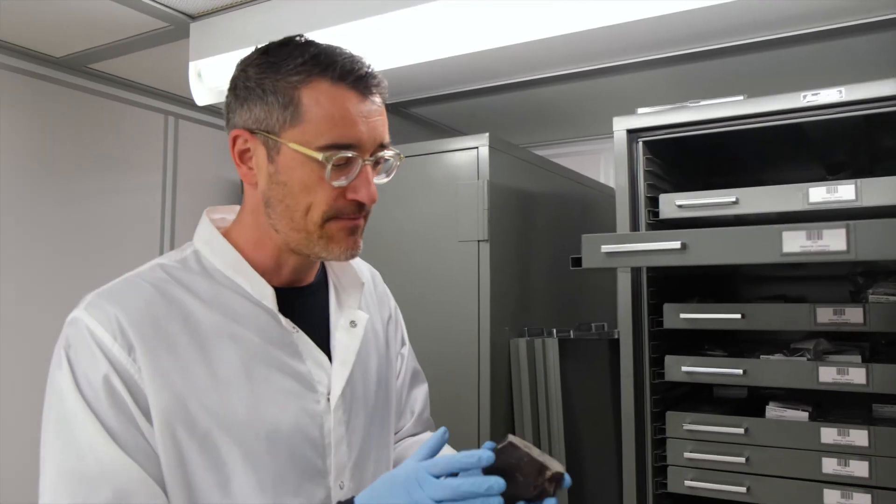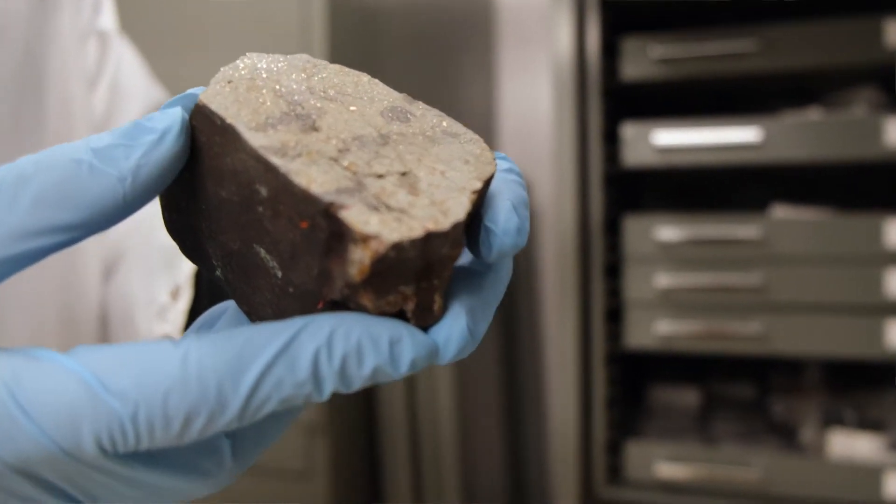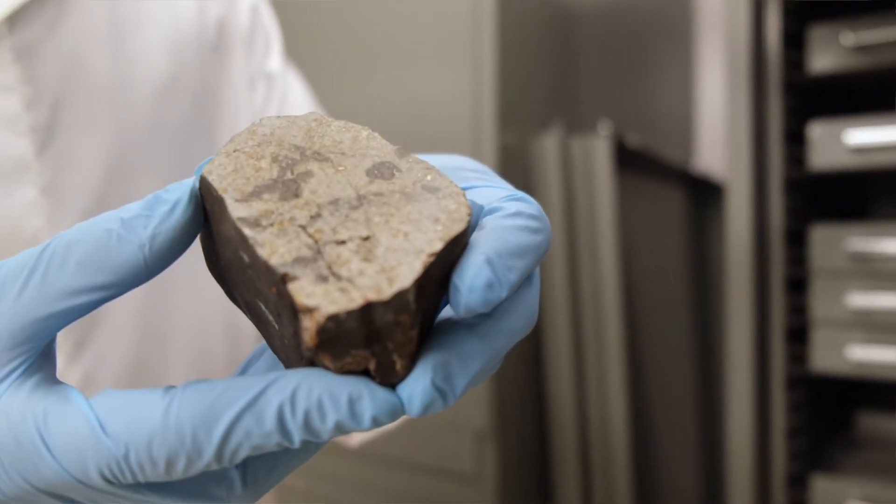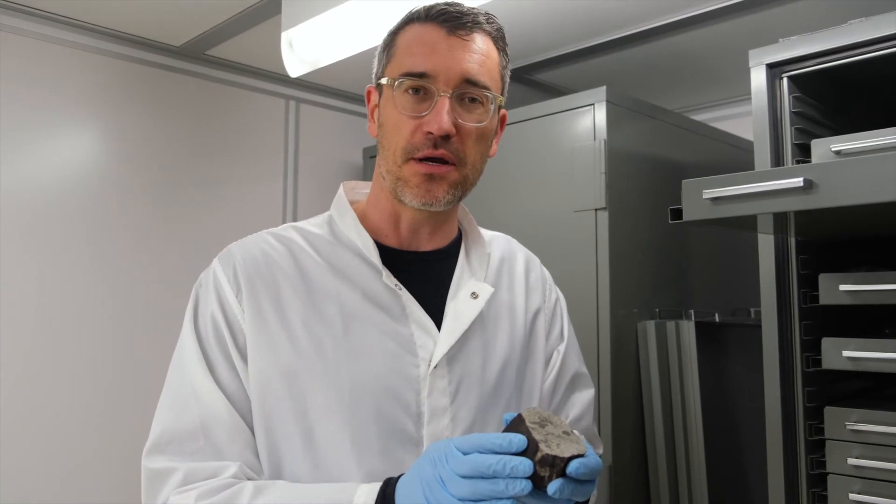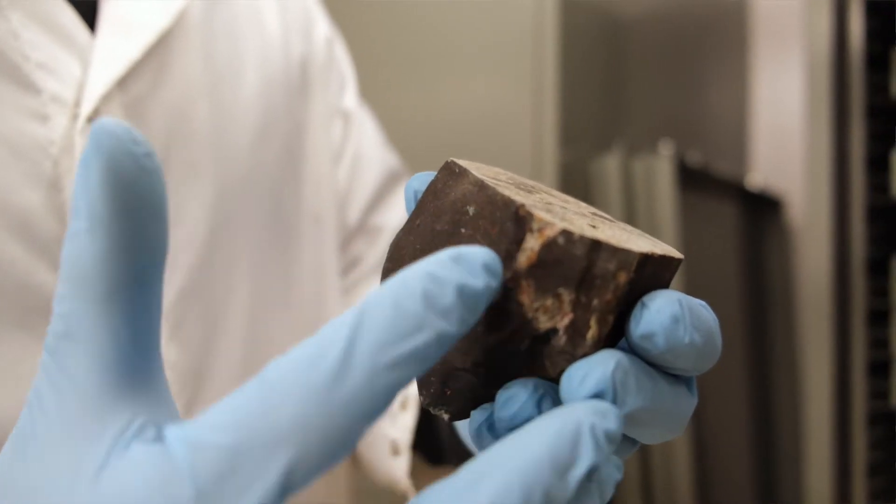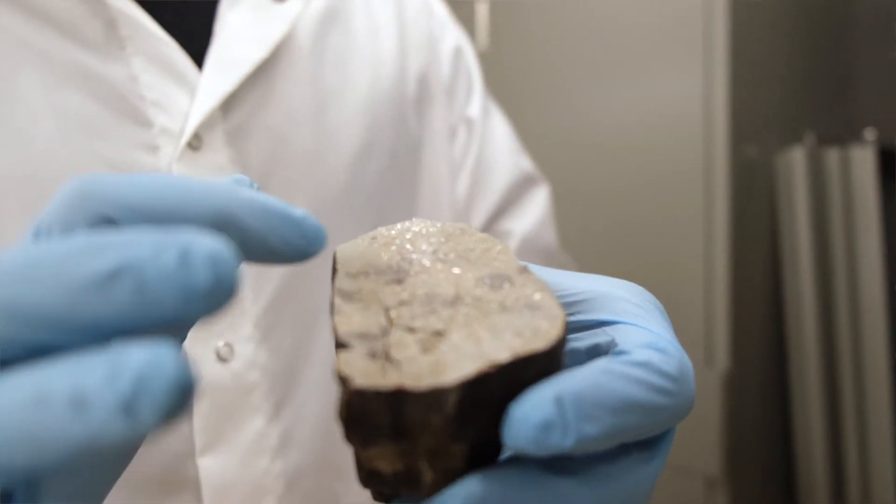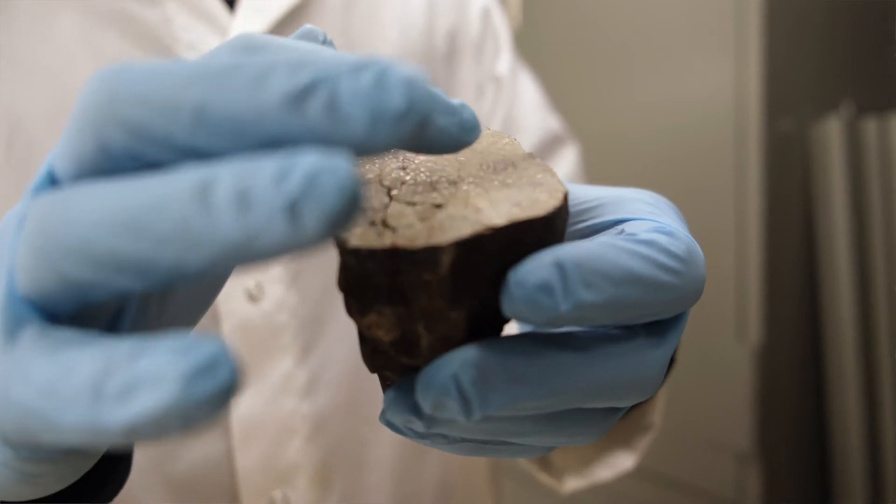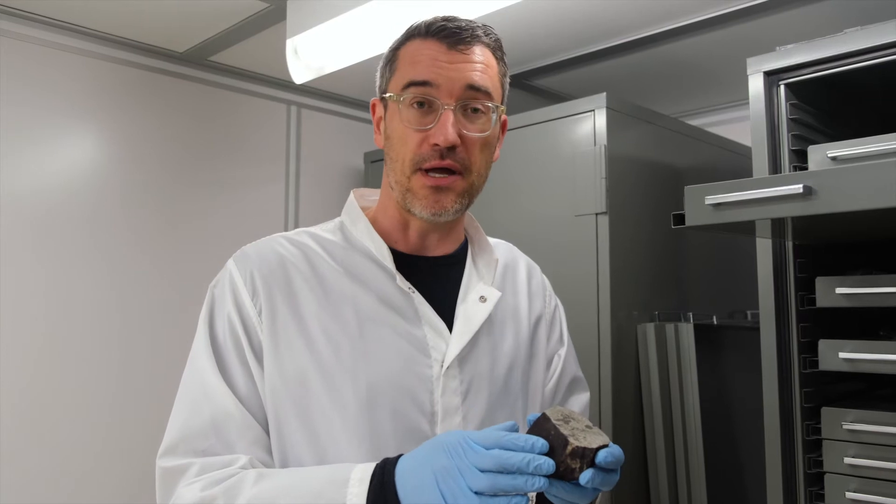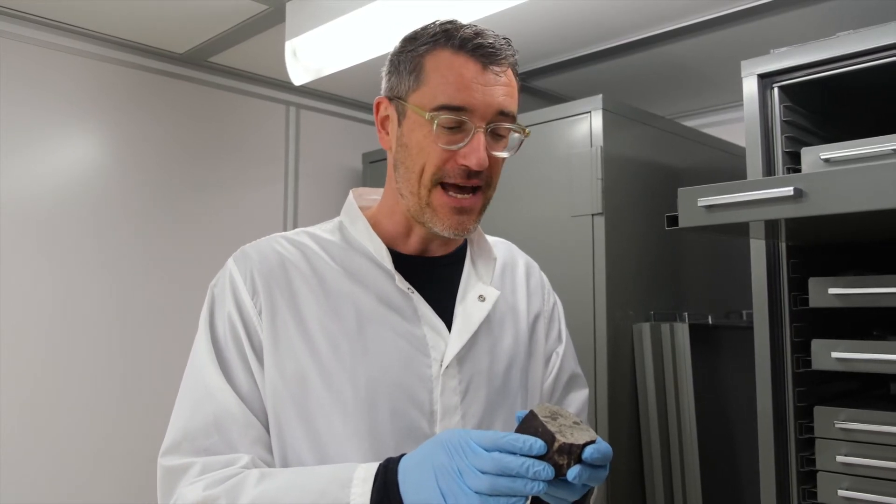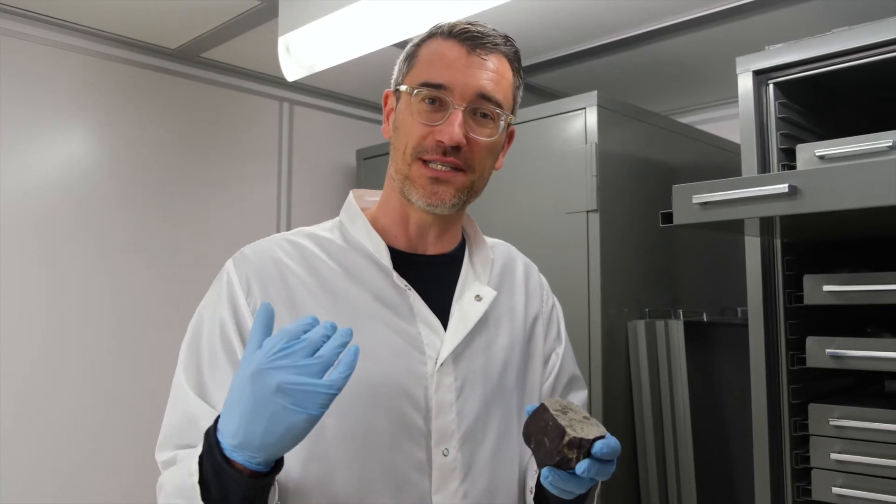This is a famous meteorite because not only was the fireball observed, it was tracked on a series of cameras that existed across the prairies, called the Meteorite Observation and Recovery Project. In 1977 when this fireball occurred, the fireball information from the cameras was reduced—that is, it was basically solved—to figure out where meteorites might be found on the ground. A search was mounted and they were found at Innisfree, basically a couple hours drive east of here.